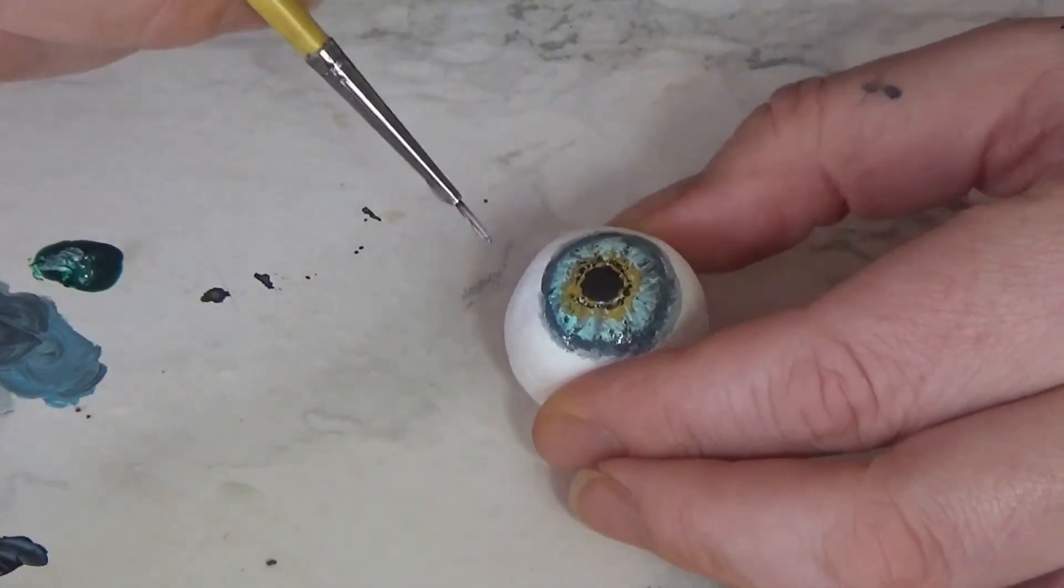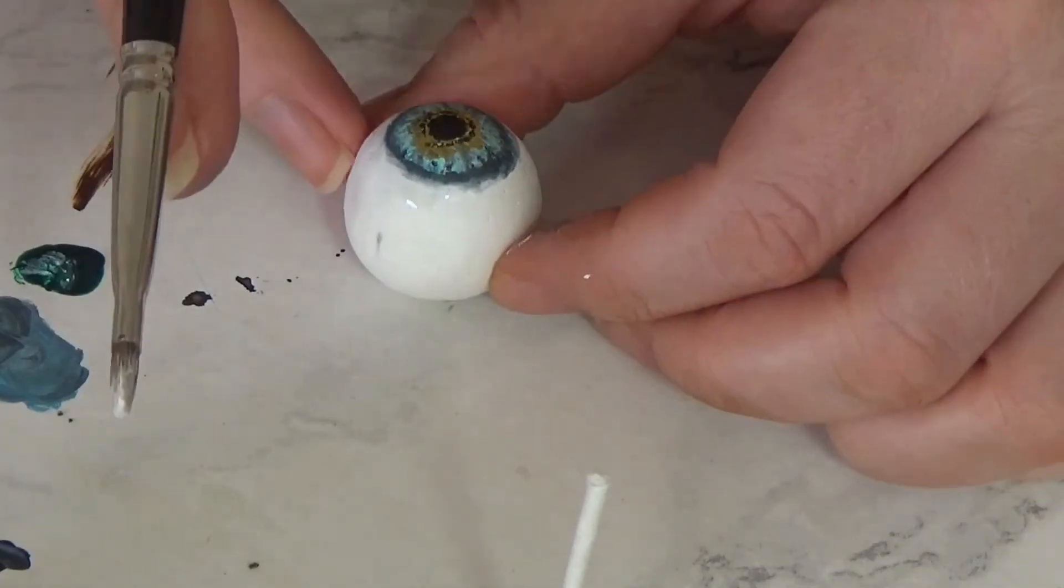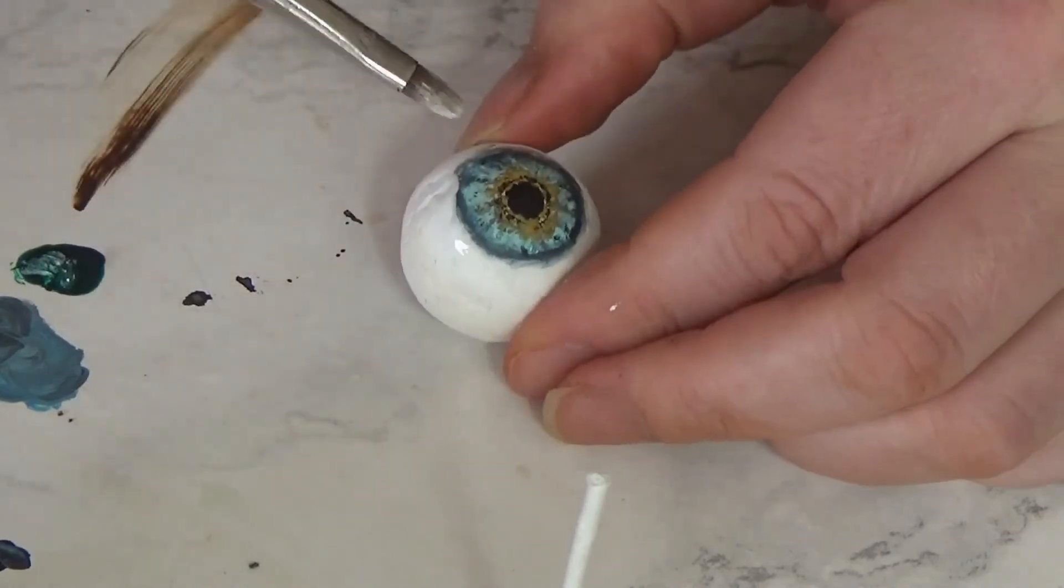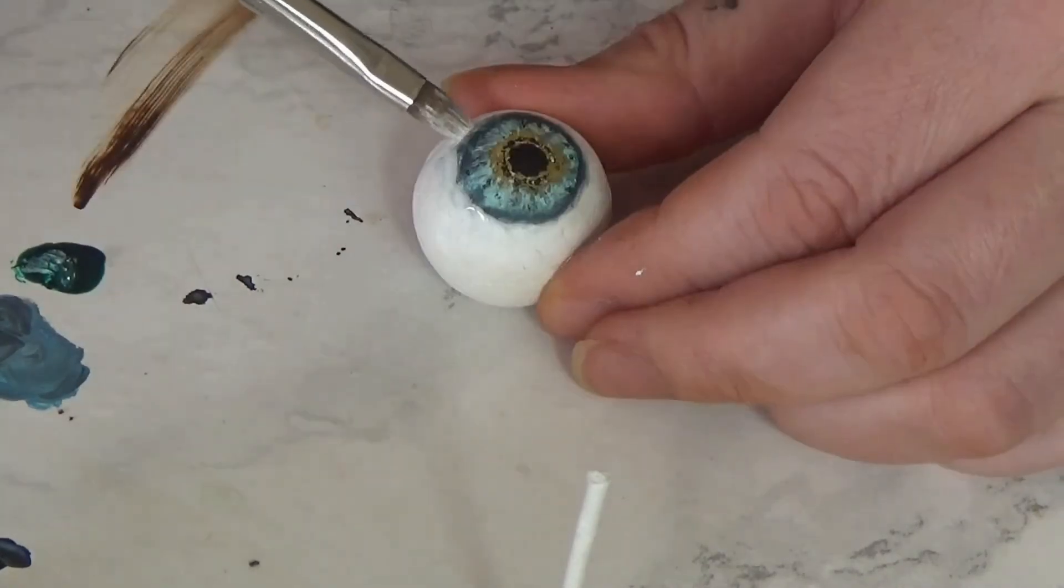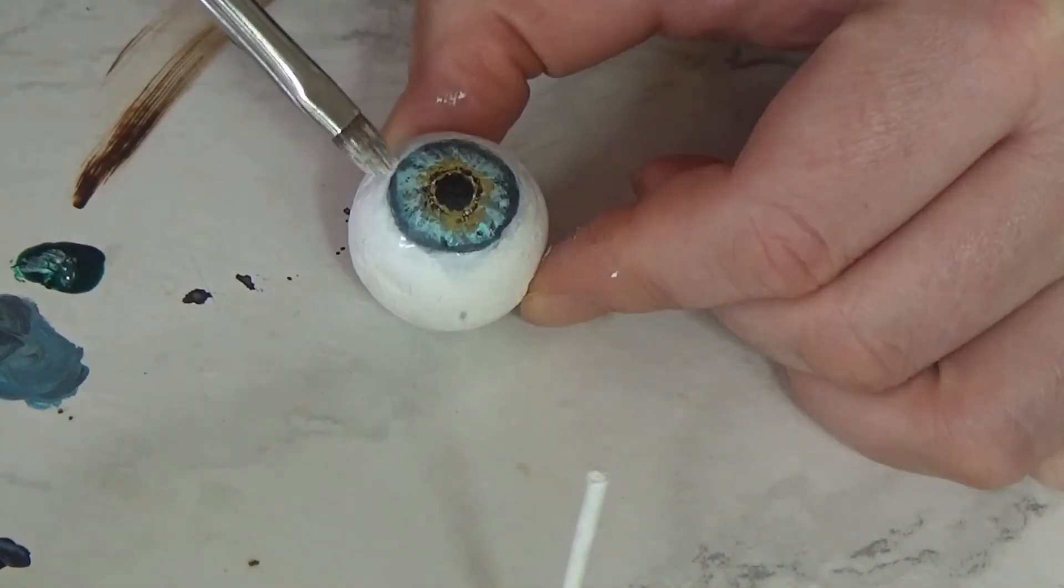I did actually end up making my iris way too big on my eyeball, so don't make the same mistake I did. I actually ended up having to go back around with some white around the edge just to make it look a little bit smaller. It was still slightly too large, so yeah, take note from me and don't make your iris too big.